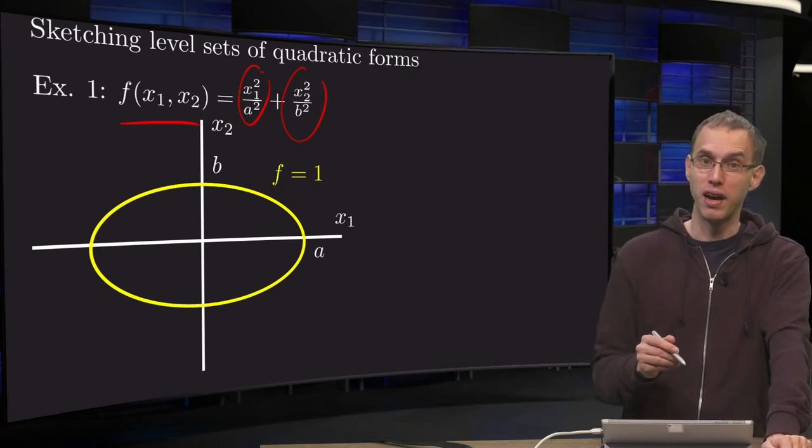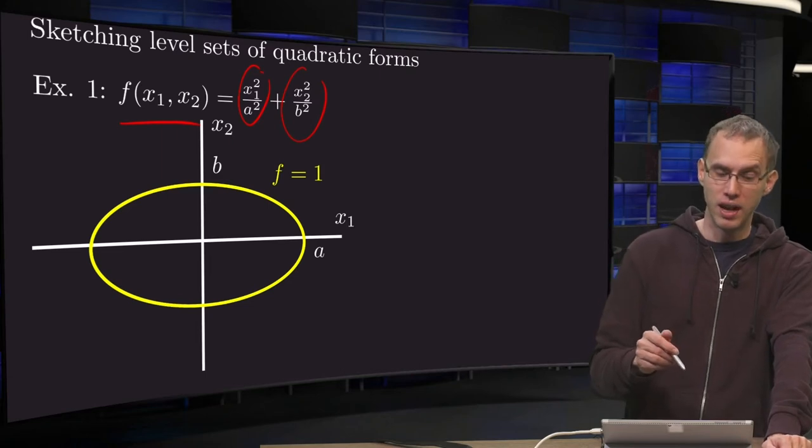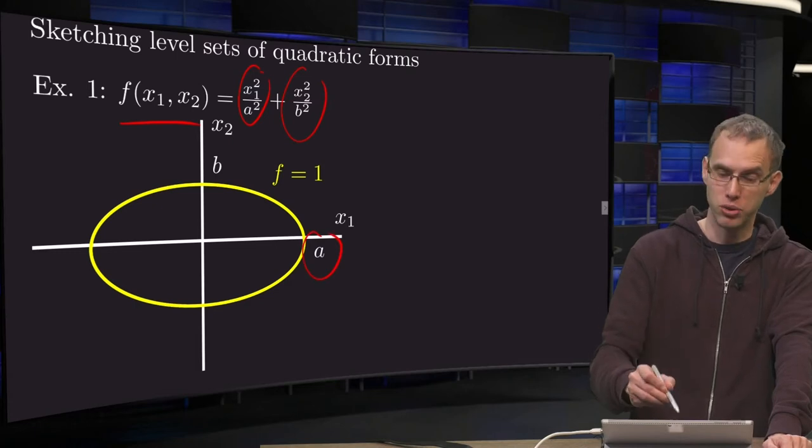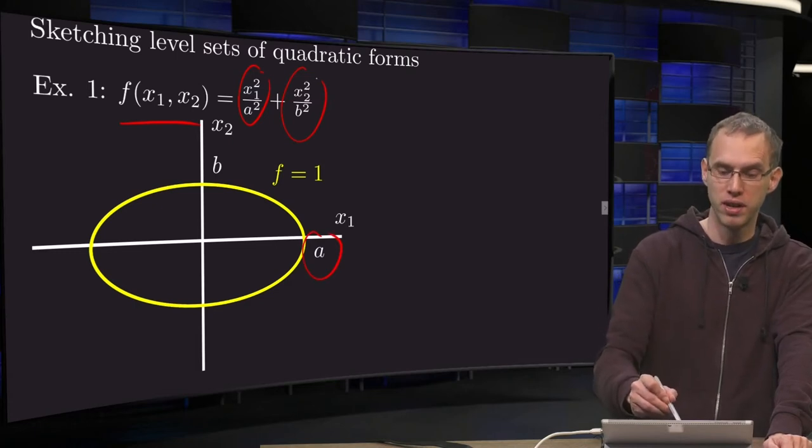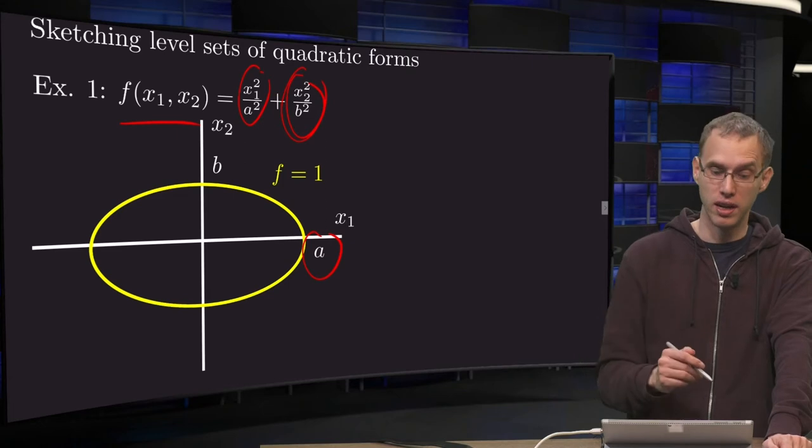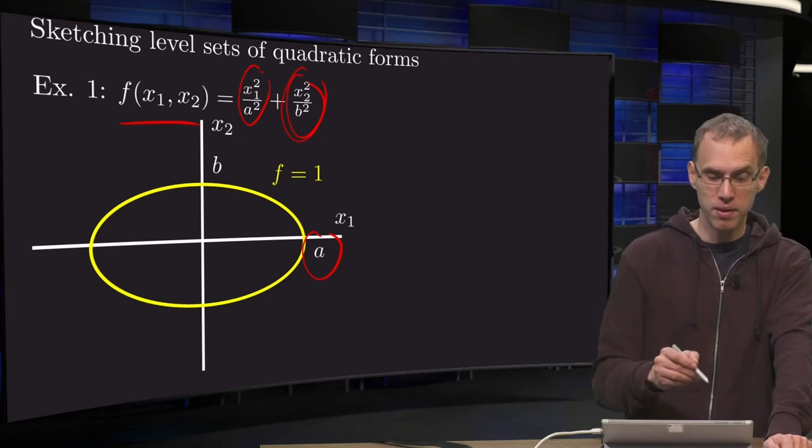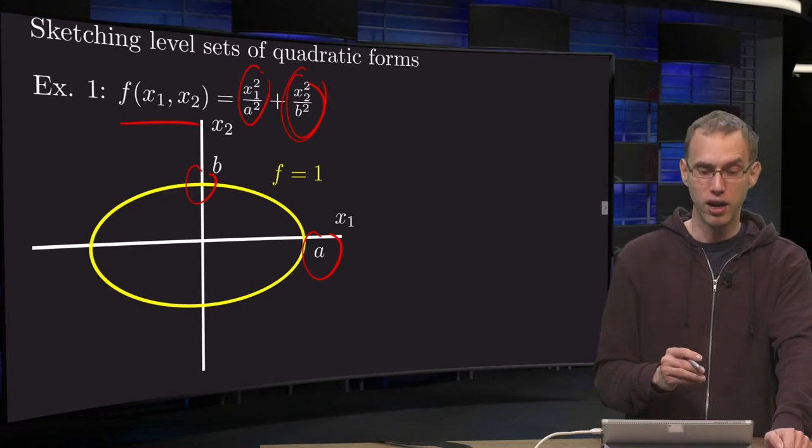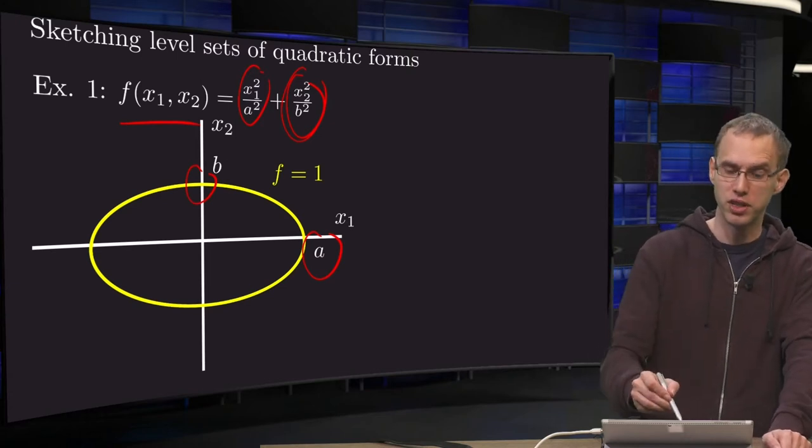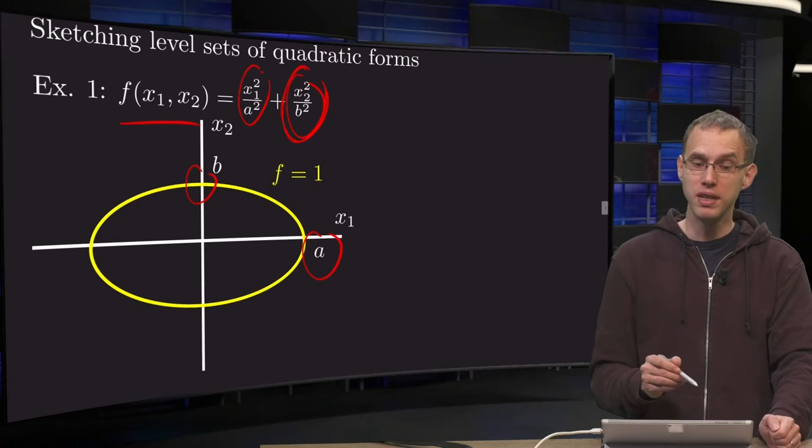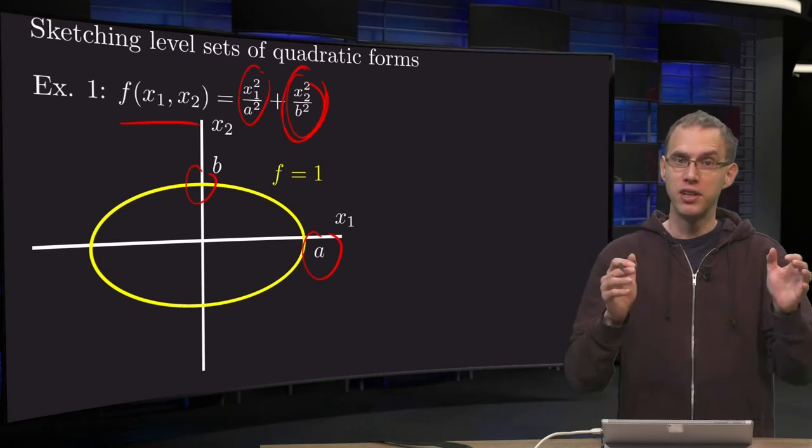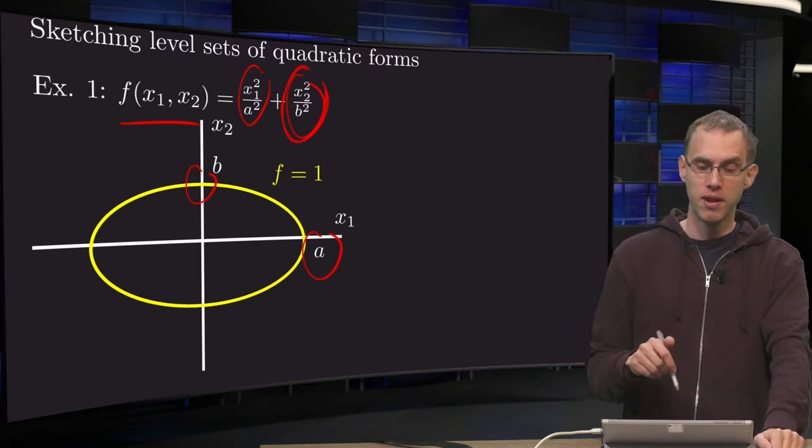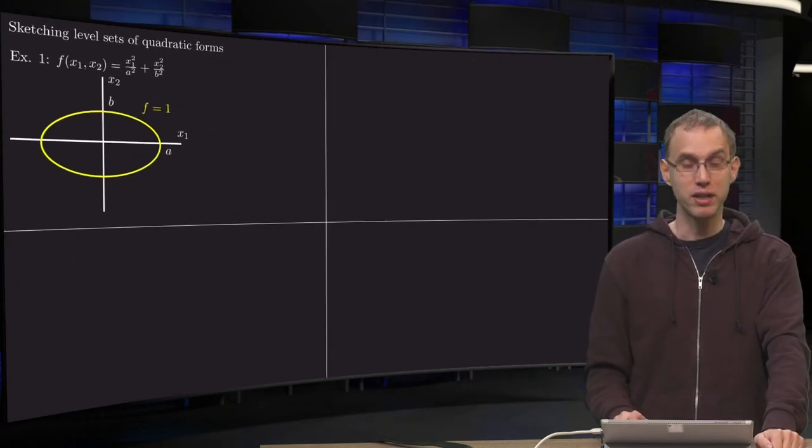For example, if you draw the level set where f equals 1, you get an ellipse which intersects the x1 axis at a, because then x2 equals 0. So if f equals 1, this term equals 0, you get x1 equals a. And here, at this point of intersection, you have x1 equals 0, so you get x2 equals b. So there you have your ellipse. It is basically a circle which is a bit squeezed in this direction or in that one. So that is one example of a quadratic form.